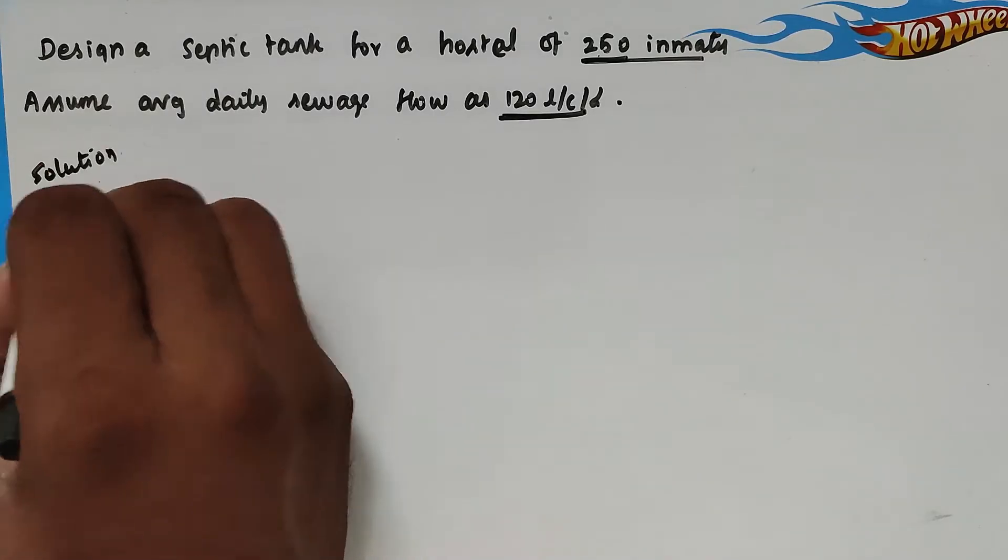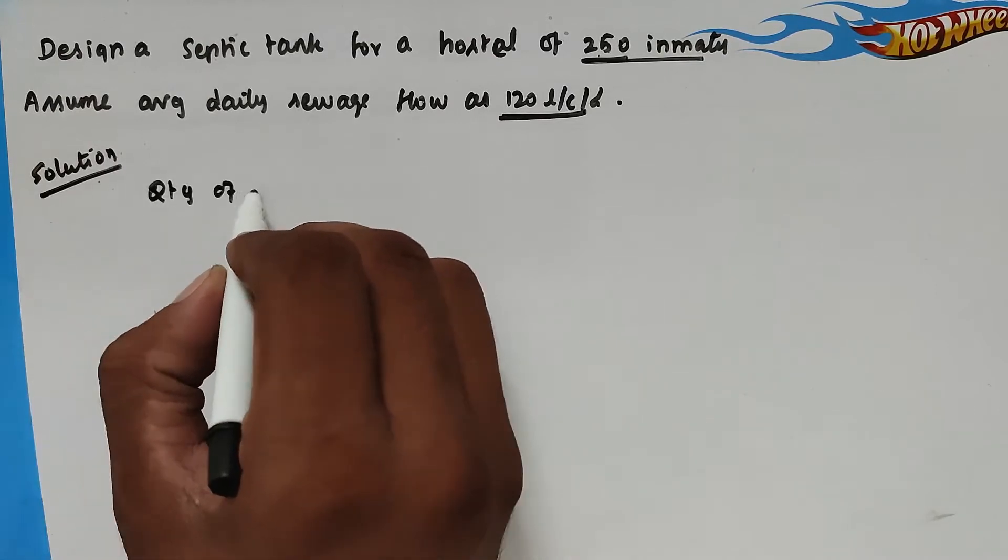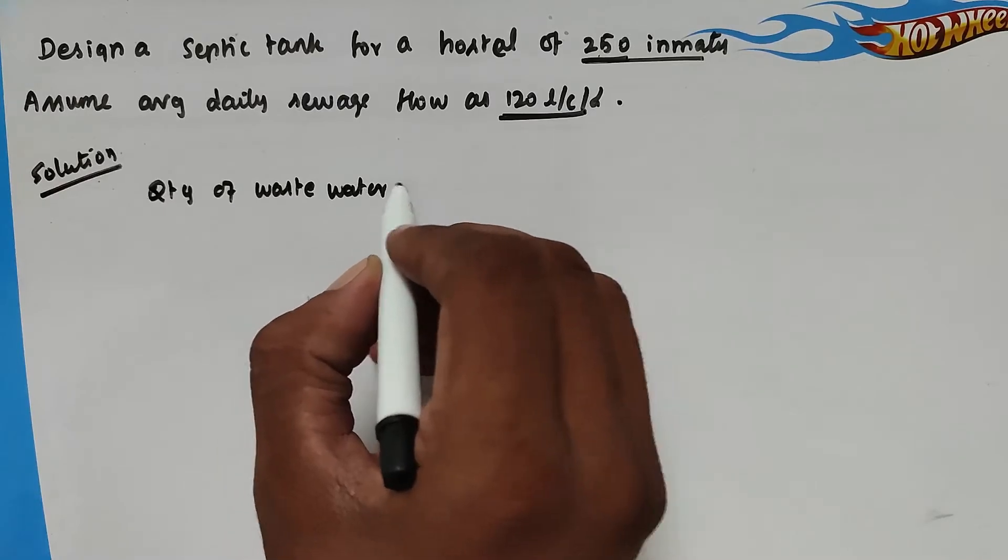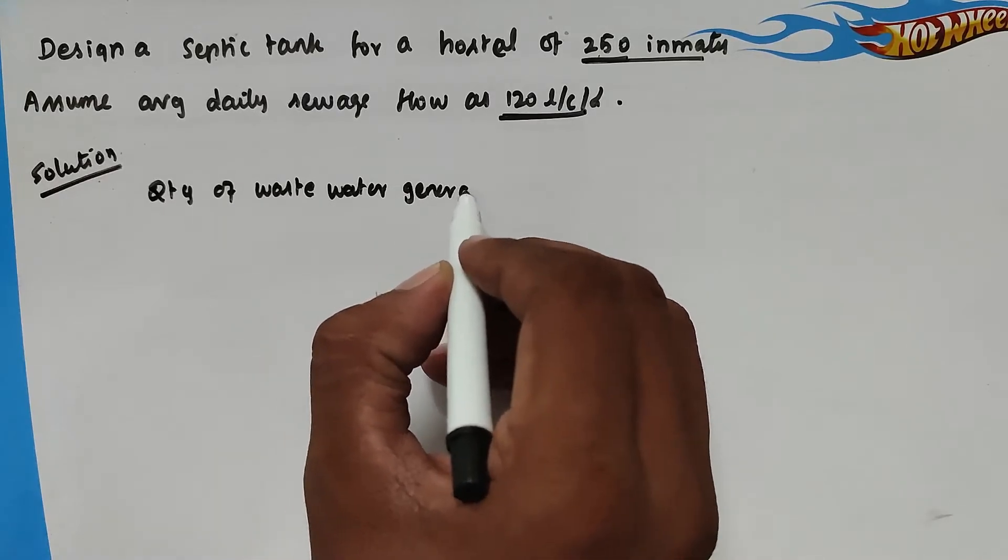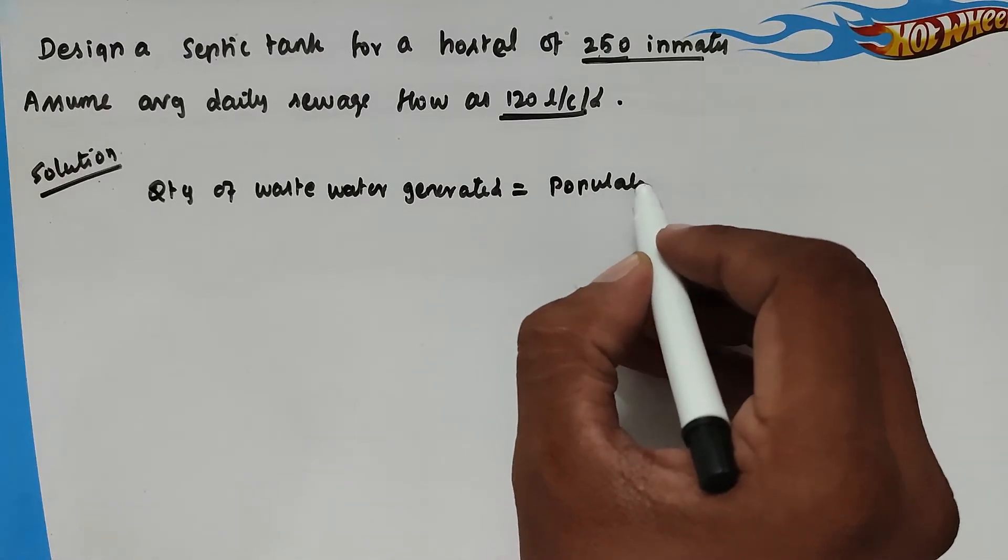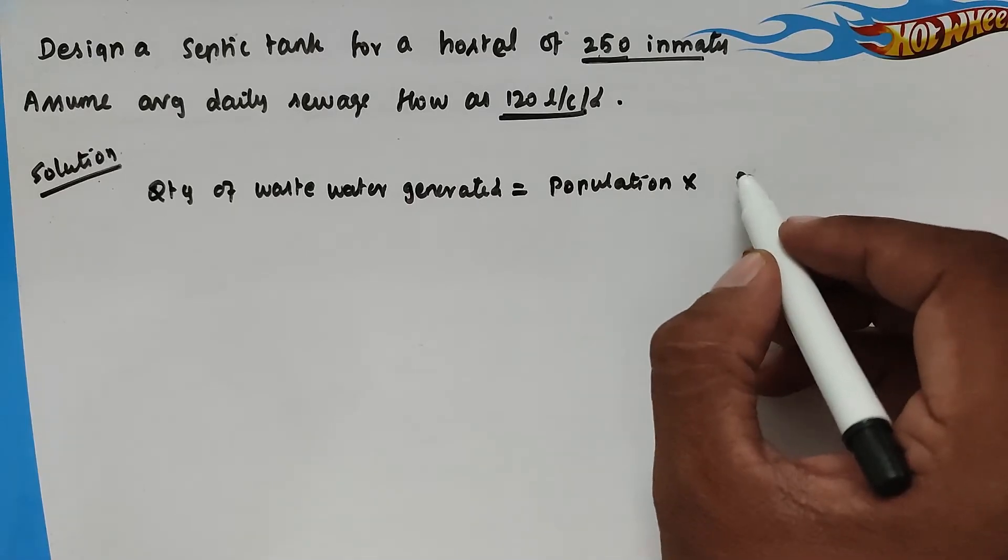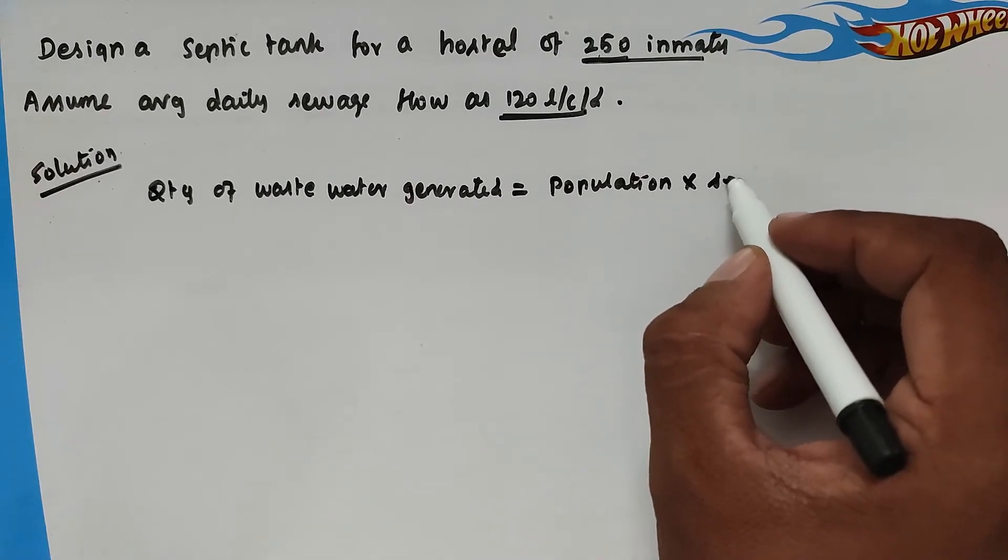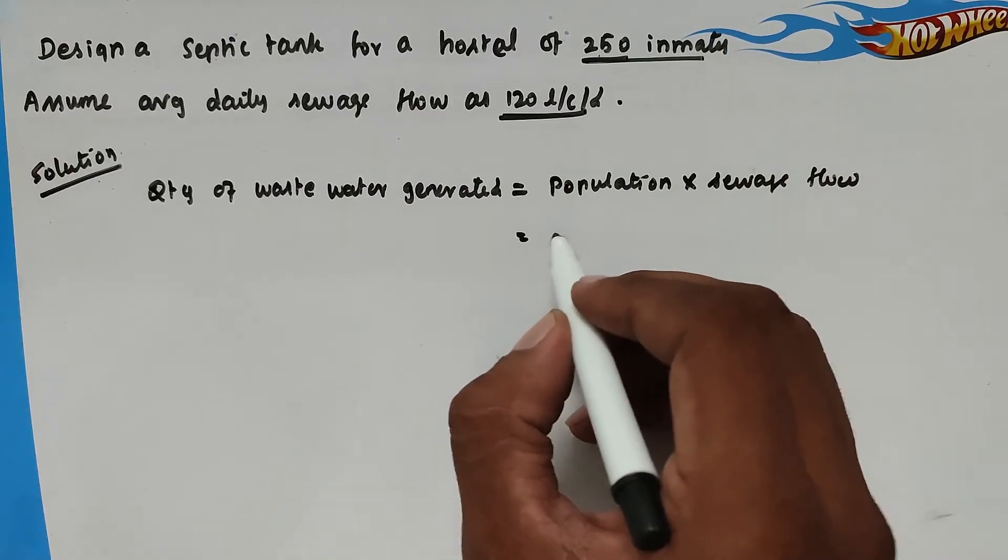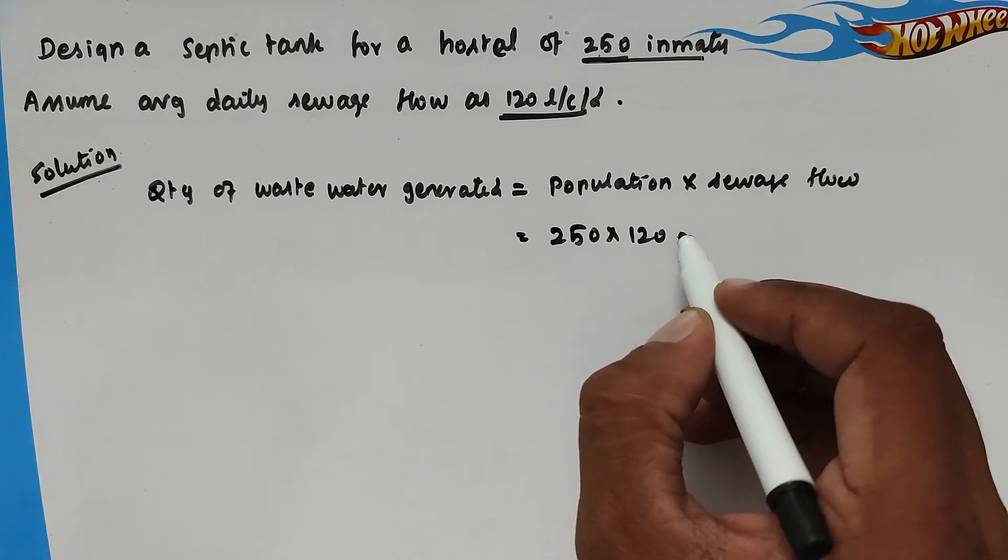The quantity of waste water generated equals population into sewage flow. So the population will be 250 into the 120 liter per capita per day.